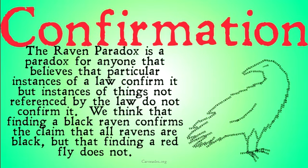The Raven Paradox is a paradox for anyone that believes that particular instances of a law confirm it, but instances of things not referenced by the law do not confirm it. We think that finding a black raven confirms the claim that all ravens are black, but that finding a red fly, for example, does not.